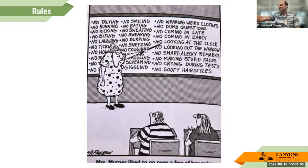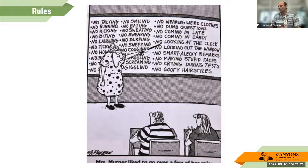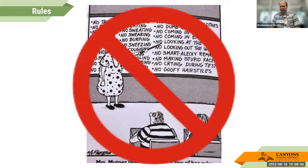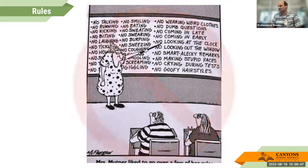Rules like 'no coming in late, no coming in early,' 'no looking out the window' — students will find exceptions. The other problem is they're not well-defined: 'no dumb questions,' 'no wearing weird clothes' — what does that even mean? What is weird to students may not be weird to the teacher and vice versa. That is not the ideal for classroom rules.